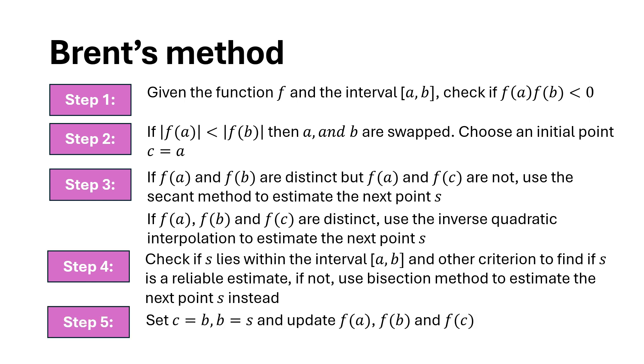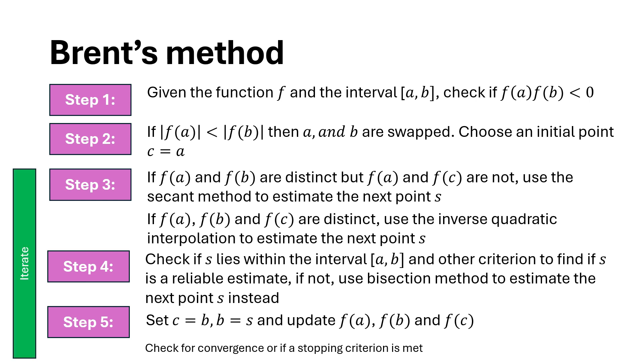In step 5, we update values by setting c equals to b and b to s and then update the corresponding function values. We check for convergence and if a stopping criterion is not met, we iterate for the next estimate.